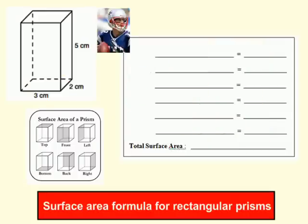Alright, let's take a look at another example. Remember, Tom Brady left right for Boston. So we're going to do the top first. So the top would be 3 times 2, so that's 6 square centimeters. The bottom is going to be exactly the same, because they're congruent.